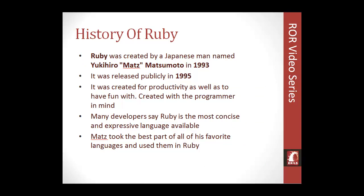A little bit of history on Ruby. It was created by a Japanese man named Yukihiro Matsumoto, better known as Matz, M-A-T-Z. He created Ruby in 1993, and it was released to the public in 1995. Many developers say that Ruby is one of the most expressive and concise programming languages. Matz had a different approach when he created Ruby than most programming language developers — it was created for productivity and simplicity, having the programmer in mind. It was created for programmers by programmers, eliminating a lot of the crap work you have to do when building a program.